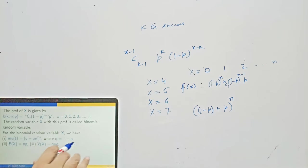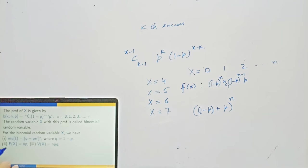You can prove that the moment generating function of binomial distribution is (Q + Pe^t)^n. Expectation is n×P and variance is nPQ. Using the definition, you can prove the MGF, and from the MGF you can obtain E[X] and E[X²] and thereby calculate Var(X). These proofs are given in the lecture notes.